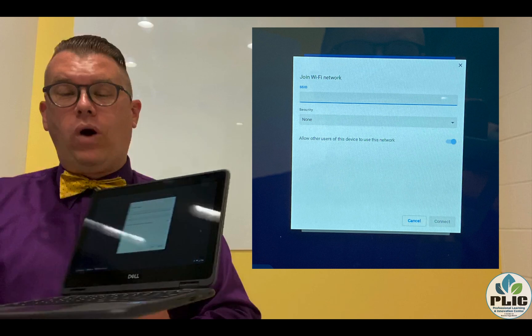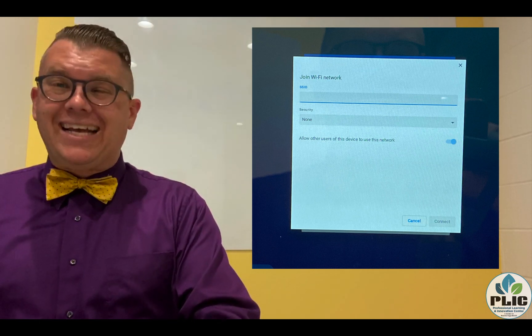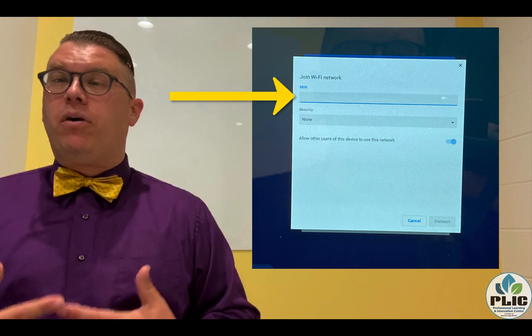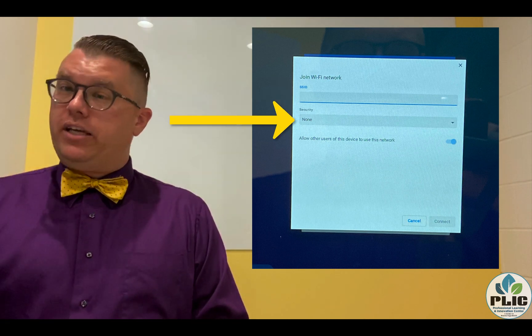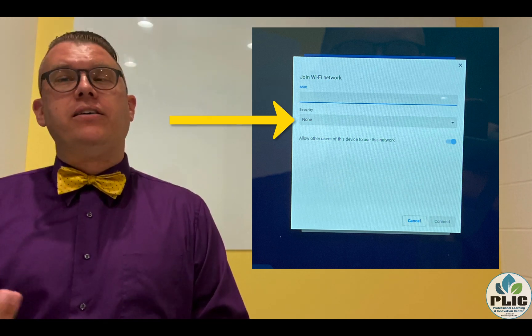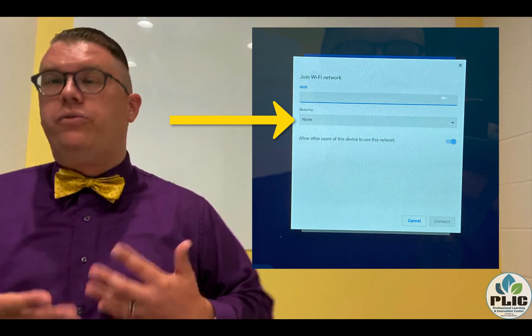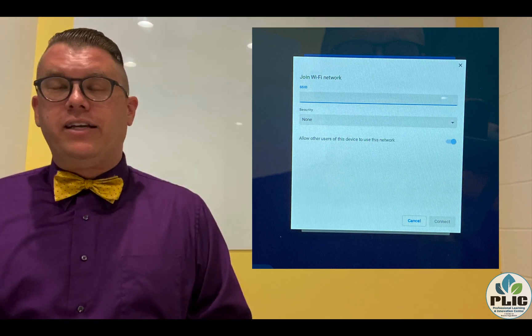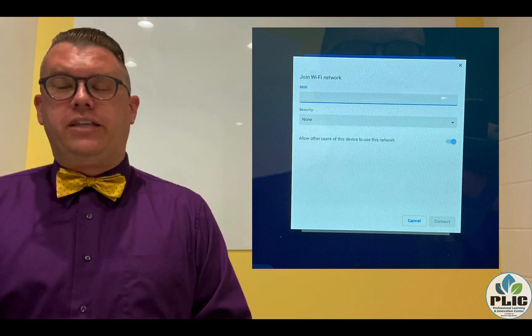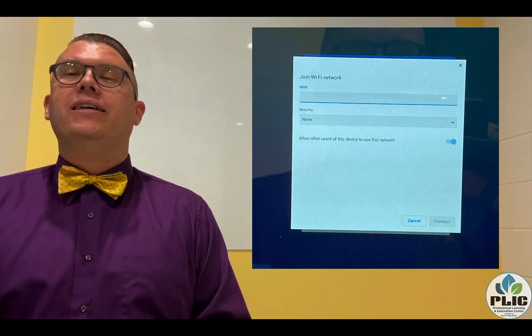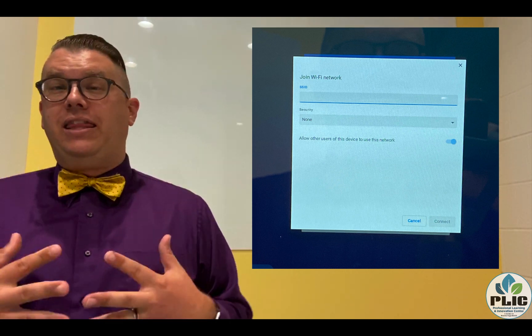The SSID is the name of your home's Wi-Fi network. The security setting depends on how your network is set up. Once I enter in the SSID and give it the security setting, I'll have the option to add my password and connect. If all that information is correct, your Chromebook is now on your home's network.